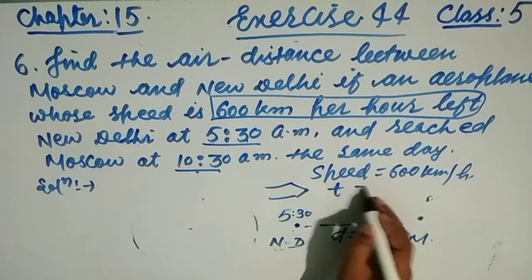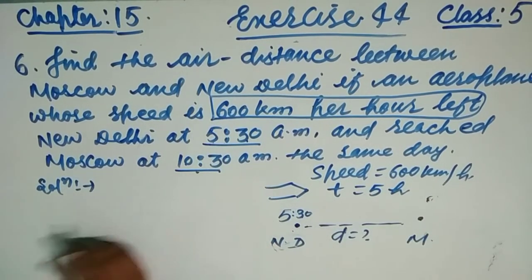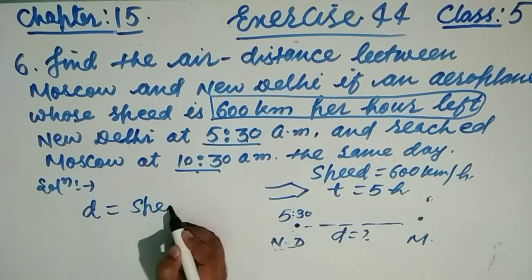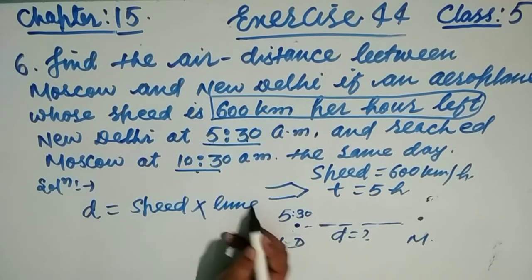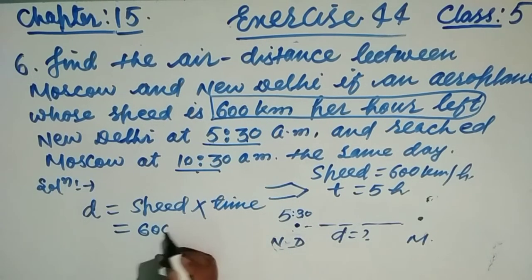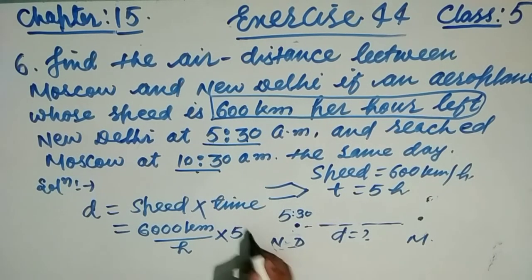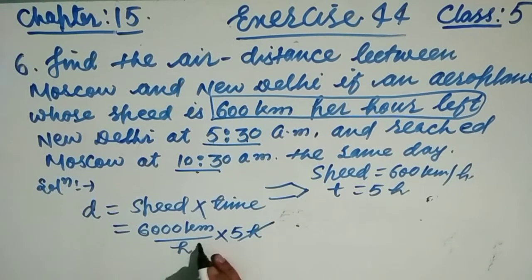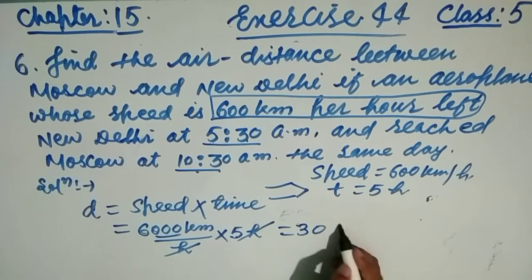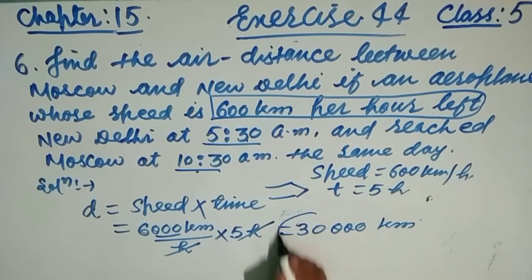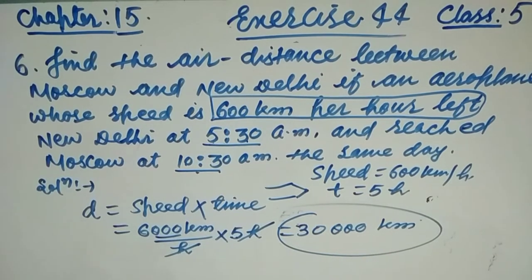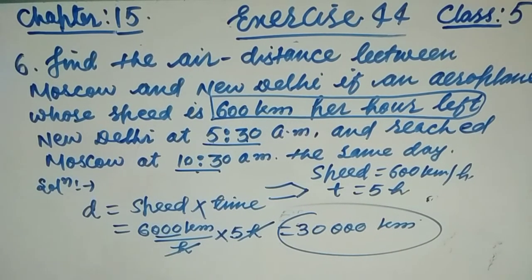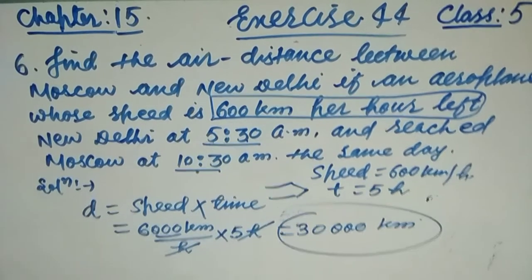Now distance equals speed multiplied by time. Speed is 600 kilometers per hour and time is 5 hours. The hours cancel, and 600 × 5 = 3000. Wait — 600 × 5 = 3,000 kilometers. So the plane traveled 3,000 kilometers from New Delhi to Moscow. That is the answer.